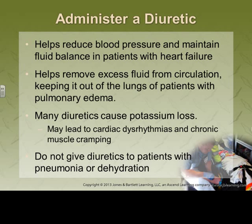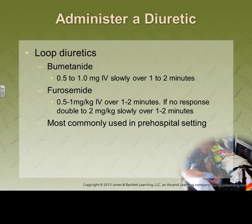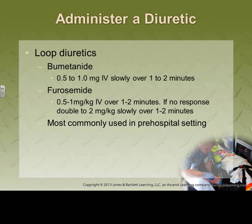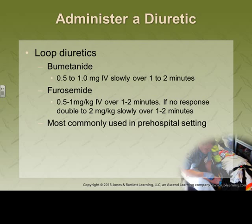If we give a diuretic in the field, it would be Lasix. Typical dosage is 40 mg — the book says 0.5 to 1 mg/kg, but clinically it's usually 40 mg. If it doesn't work, double it to 80. If the patient is already on Lasix therapy, double the dose they normally take. The problem with Lasix and Bumex is that they are not potassium-sparing — they're loop diuretics, and when they pull off fluid they pull electrolytes too, namely potassium and sodium.